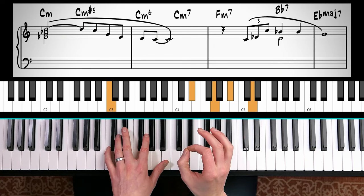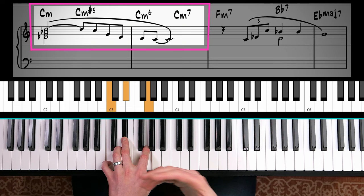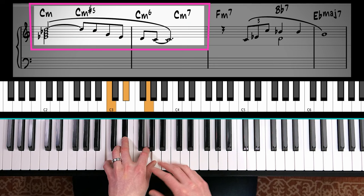Cry Me A River has this really distinctive chromatic line. That's what makes this song. It's very similar to the James Bond theme, but it just keeps going up in this case.